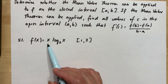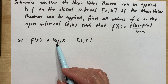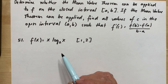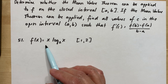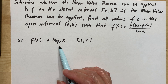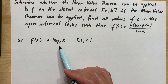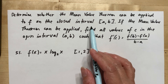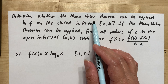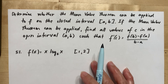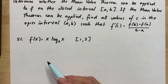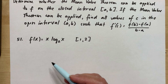We have the given function f(x) = x·log₂(x). When you graph this function, it is continuous, so it satisfies the first condition of the Mean Value Theorem. The second condition of the Mean Value Theorem is differentiability.